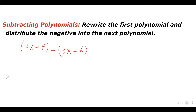Let's move on to subtracting polynomials. When we're subtracting polynomials, what we need to do is rewrite the first polynomial and distribute the negative into the next polynomial. Look at this example: I have 6x plus 4 in a bracket minus bracket 3x minus 6. So we rewrite the first polynomial.